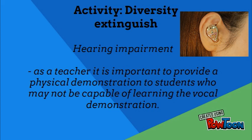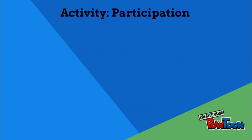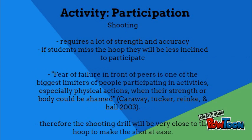After passing and dribbling the ball, the activity concludes with a shot to the basket. Shooting a basketball requires quite a lot of strength, as the ball is heavier than a volleyball or a netball. If a student fears that they can't shoot the ball into the hoop or make the distance, they will be less inclined to participate. Fear of failure in front of peers is one of the biggest limiters of participation in physical activities, especially when their body can be shamed. Due to this, the drill finishes with a short shot from the post, positioned quite close to the basket, ensuring all students who aren't as muscularly developed will still be able to complete the activity at the same level as more developed students.